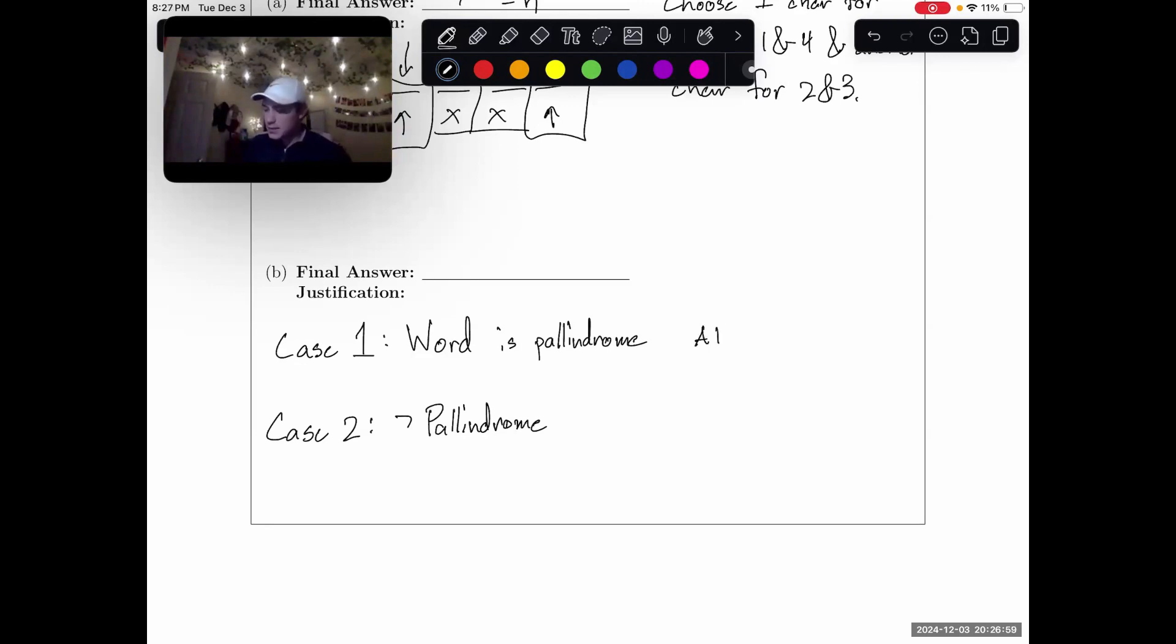For instance, ABBA. Well, Scout reading this forwards is the same as Scout reading it backwards. So whatever word is a palindrome, we don't really have to care about those too much because Scout's going to read them the same forwards and backwards. But let's consider non-palindromic words. What about ABCD?